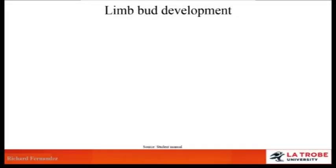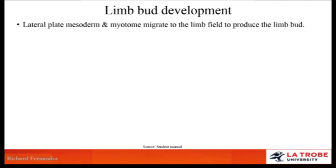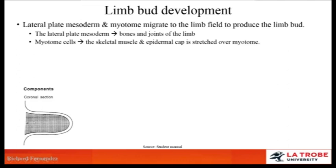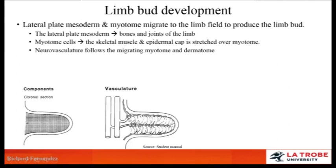Limb bud development also occurs in a similar segmental way. The lateral plate mesoderm and the myotome migrate into a limb field to produce a limb bud. The lateral plate mesoderm develops into bones and joints of the limb, whereas the myotomal cells develop into skeletal muscle, and the epidermal cap is stretched over the myotome. The next stage is the development of neurovasculature — arteries and veins get dragged out with the developing limb bud, and these neurovascular structures migrate with the dermatome and myotome as they develop.